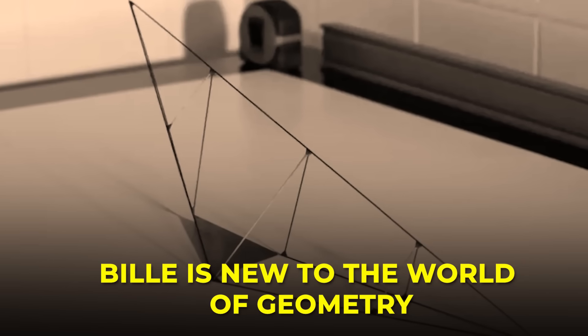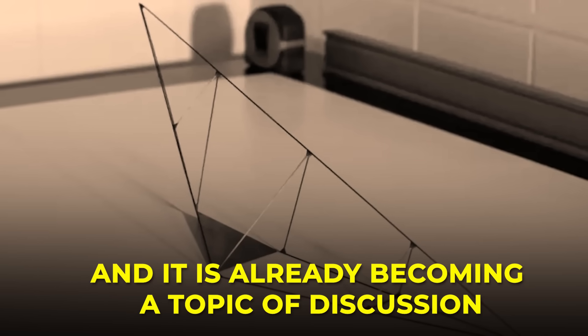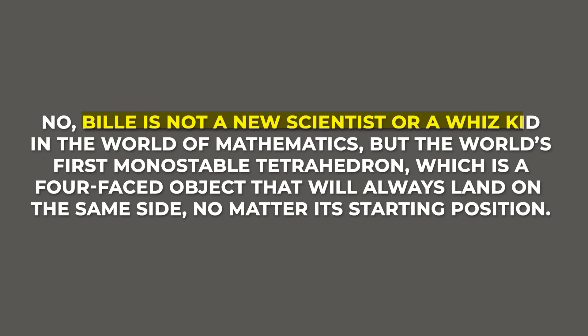Bile is new to the world of geometry and is already becoming a topic of discussion. No, Bile is not a new scientist or a whiz kid in the world of mathematics, but the world's first monostable tetrahedron, which is a four-faced object that will always land on the same side no matter its starting position.